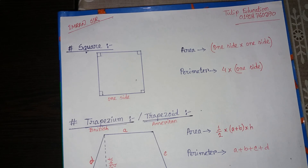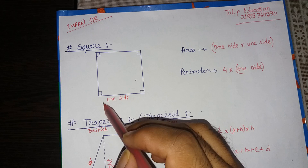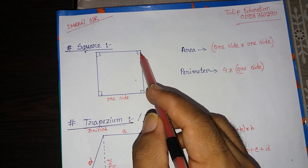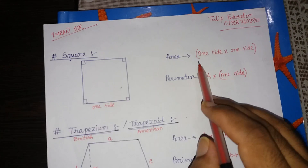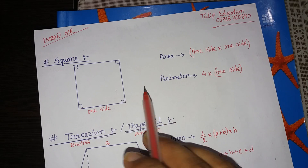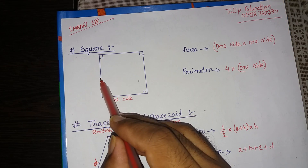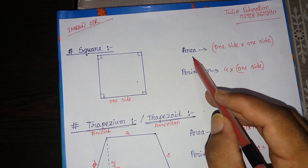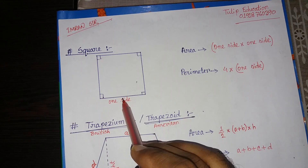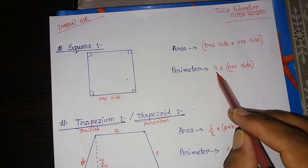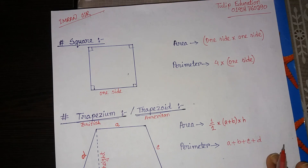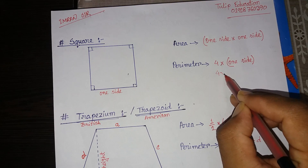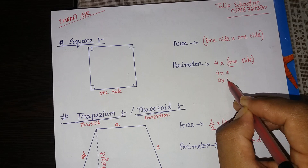The next topic is the square. The properties of a square are: all four sides are equal and all four angles are right angles — each angle is 90 degrees. The area of a square is one side multiplied by one side. If we are given one side's value we can calculate the area. The perimeter is 4 multiplied by one side, also written as 4a or 4s, where a or s represents the side.